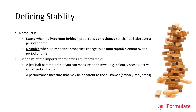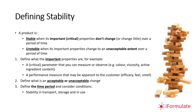Those important properties are critical parameters you can usually measure or observe — things like color, viscosity, or active ingredient content. There are also performance measures apparent to the customer such as efficacy, feel, or smell. You need to define what's acceptable or unacceptable change, and also specify the conditions, time period, and context — whether stability in transport, storage, or in use, or all three.